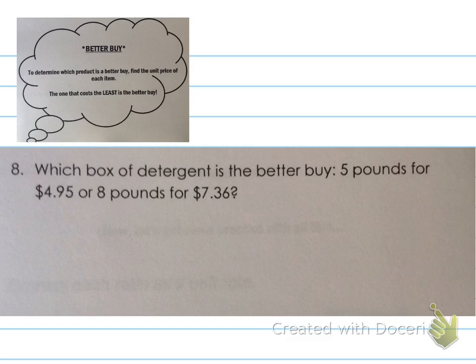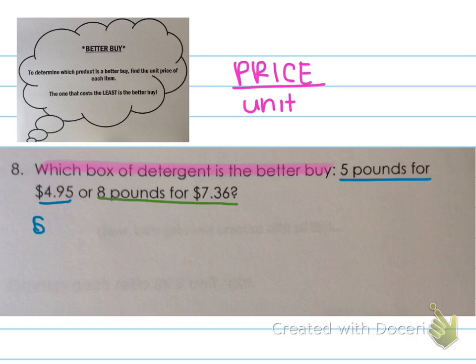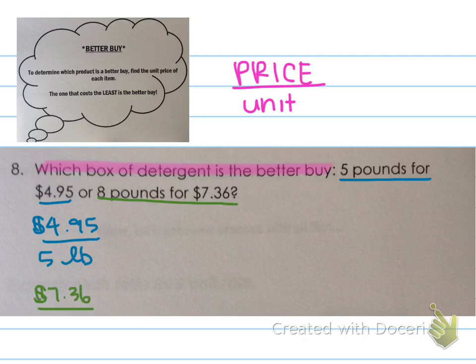Which box of detergent is the better buy: 5 pounds for $4.95, or 8 pounds for $7.36? We're finding the better buy, so let's go back through — 5 pounds for $4.95, and 8 pounds for $7.36. We need to set up our ratios. The easiest way to do this is price over the unit. For the 5-pound bag, $4.95 is the numerator and 5 pounds is the denominator. For the 8-pound bag, the price is the numerator and the unit is the denominator. Now we have the ratios and just need to find the unit prices.